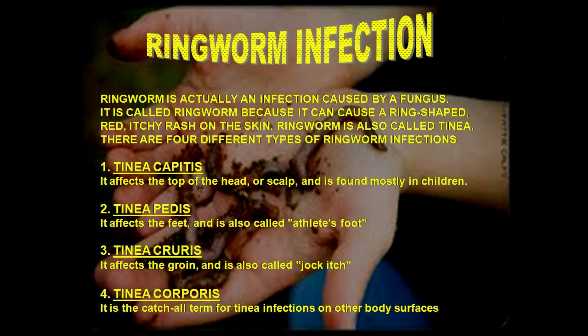Ringworm is actually an infection caused by a fungus. It is called ringworm because it can cause a ring-shaped, red, itchy rash on the skin. Ringworm is also called tinea. The first type is tinea capitis, which affects the top of the head or scalp and is usually found in children.